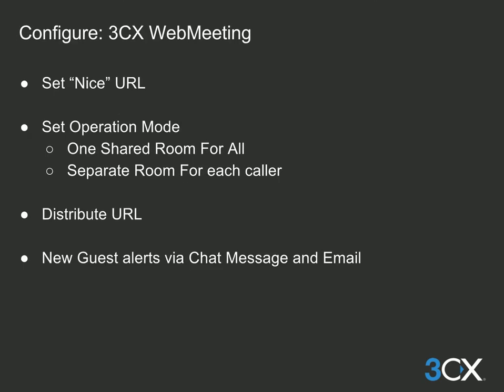To get 3CX WebMeeting to work with the extension, you will need to create an easy-to-remember descriptive URL name, for example the extension user. This will identify to the caller where they are calling and will assign the URL to your extension. Choose the operating mode of WebMeeting that you require, whether to connect everyone who calls to a common room — which requires that the person being called is already in a WebMeeting room.